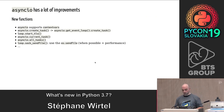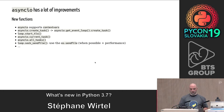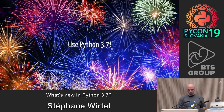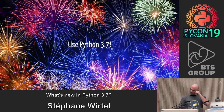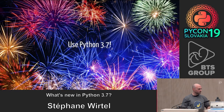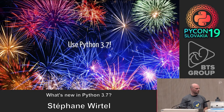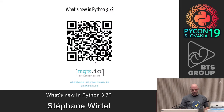In asyncio we have some new functions: asyncio supports context variables, create_task as an alias, TLS connection support, current_task, all_tasks, and the sendfile function from the kernel. Use Python 3.7! Also, Python 2.7 is end-of-life in a few months — a lot of the remaining fixes are just Python 2.7 bug fixes. Please migrate.